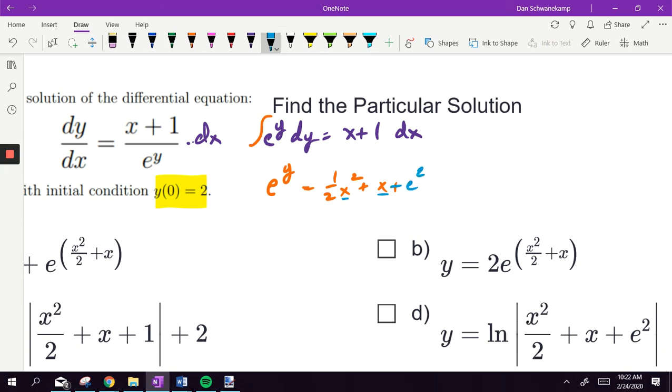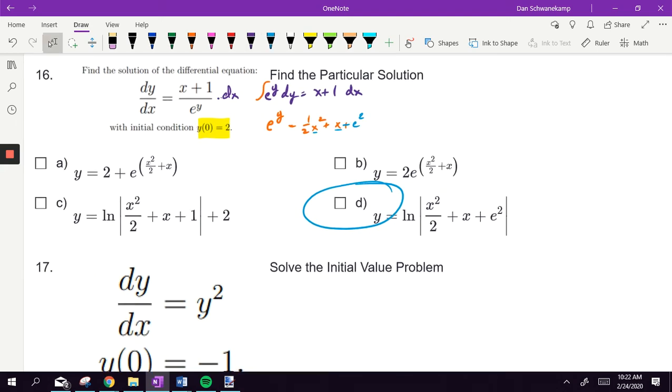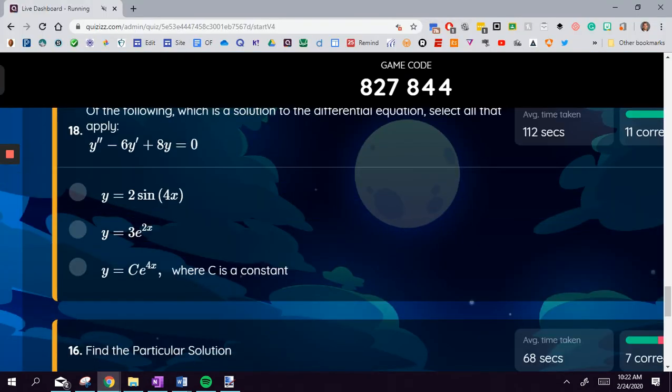How do I get rid of e? Natural log. ln of one half x squared plus x plus e squared. It's d. Make sense how we're making that distinction?